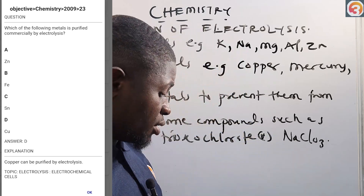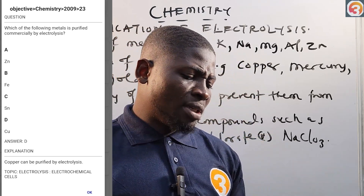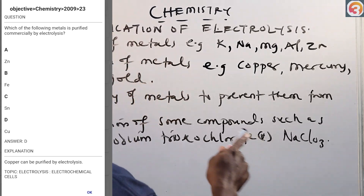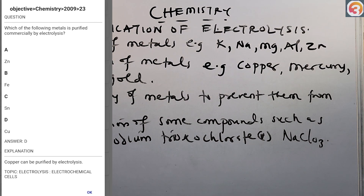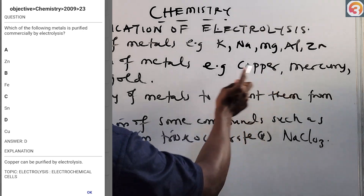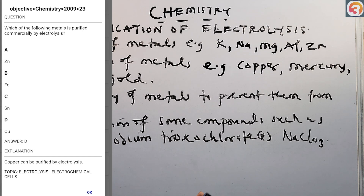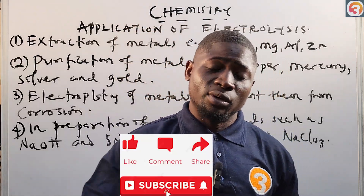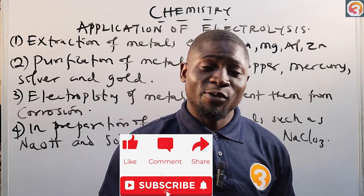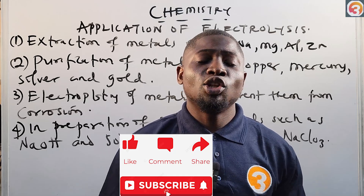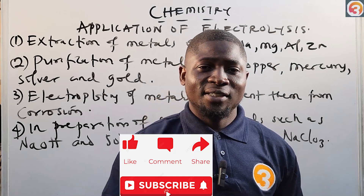So the 2009 chemistry question number 23 asks: which of the following metals is purified commercially by electrolysis? As we discussed, one application of electrolysis is the purification of metals like copper, mercury, silver, and gold. Looking at the options — zinc is wrong, iron is wrong, tin is wrong — copper is the correct answer. Please like this video, subscribe to the channel, and see you in the next episode where we cover Faraday's laws of electrolysis.